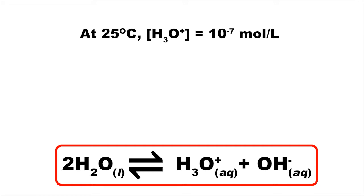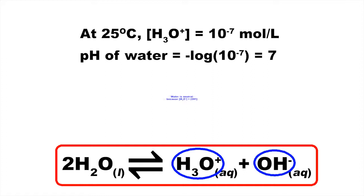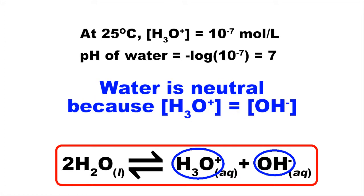At 25 degrees Celsius, the concentration of hydronium ions is a paltry 10 to the power of minus 7 moles per litre. So the pH of pure water is the negative logarithm of 10 to the power of minus 7, which equals 7. We also know that for every hydronium ion produced by the ionization of water, a hydroxide ion is also produced. So overall, water is considered to be neutral, because the concentration of hydronium ions is balanced by the same concentration of hydroxide ions.